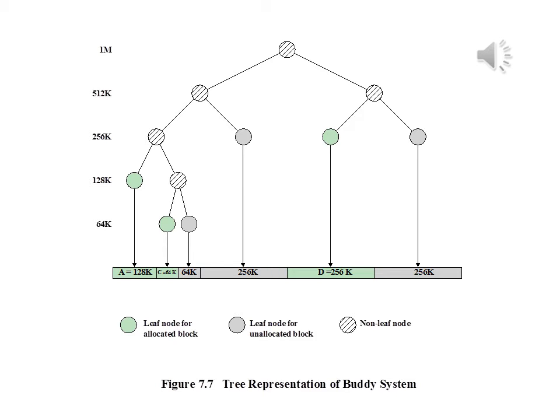The buddy system is a reasonable compromise to overcome the disadvantages of both the fixed and variable partitioning schemes. But in contemporary operating systems, virtual memory based on paging and segmentation is superior. However, the buddy system has found application in parallel systems as an efficient means of allocation and release for parallel programs. A modified form of the buddy system is used for Unix kernel memory allocation.